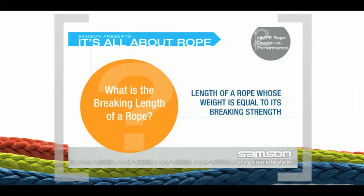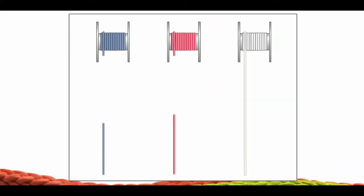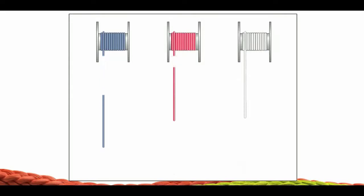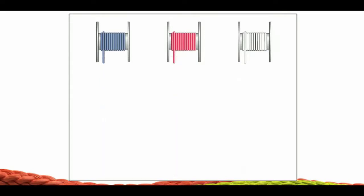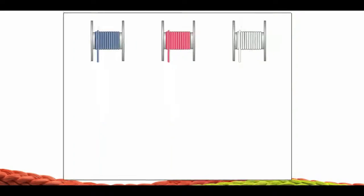Braking length describes the efficiency of a rope. It is the calculated length of a rope whose weight is equal to its braking strength. Theoretically, if suspended from one end, it is the maximum length of the rope that will support its own weight. Any longer and the rope will exceed its braking strength and fail.